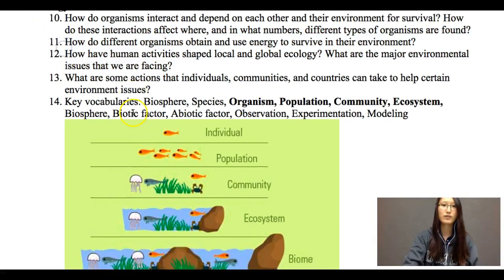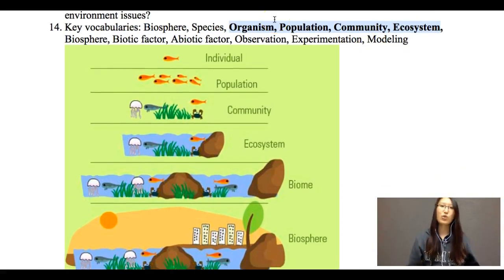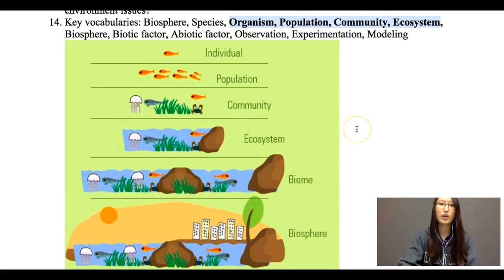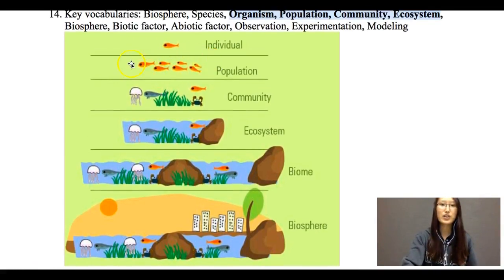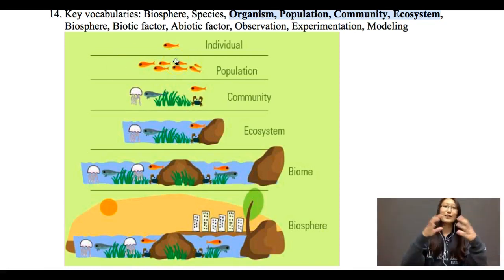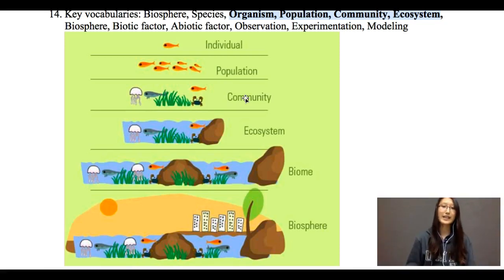Moving on to ecology — you want to make sure that you are very clear about these vocabulary terms. An individual is one single organism, any living thing. A population is organisms of the same species living in the same area. For example, you could have a population of goldfish — they're in a group, they stay at the same place, and they're all the same species. A community is larger than a population — we're not only considering one species, we're considering all the species in the same area.